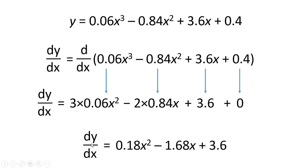So overall we have dy/dx equals 0.18, so that's just 3 times 0.06, x squared, minus 1.68x plus 3.6. Then we've got an equation that we can use to work out the gradient at any point along this line here.